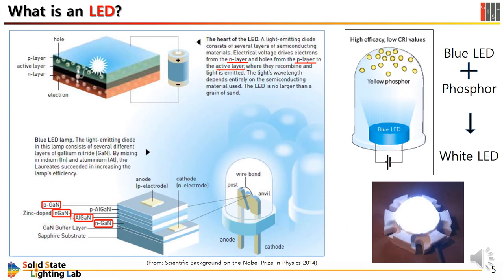The left picture shows the very basic principle of LED lighting. The right picture shows how to make white light. When you put yellow phosphor on a blue LED, you can get white light by mixing blue and yellow. I will not explain in detail here, but you can learn more in the class.